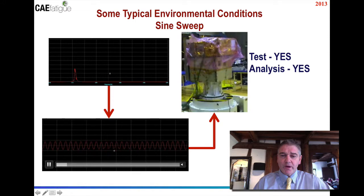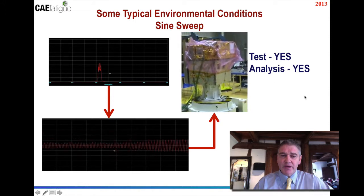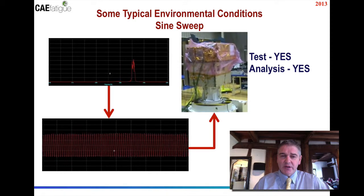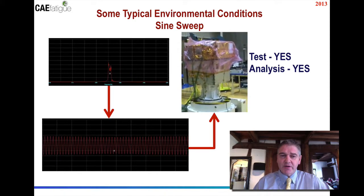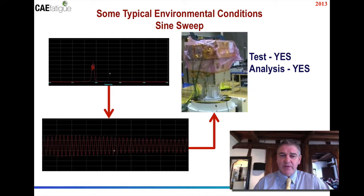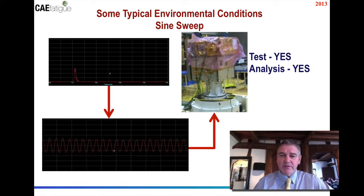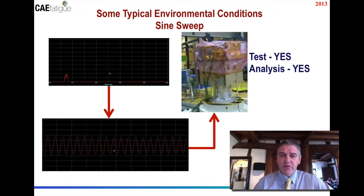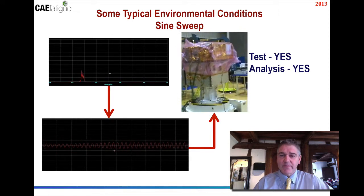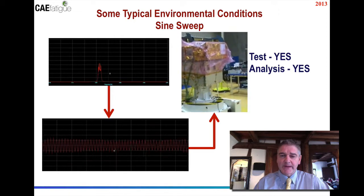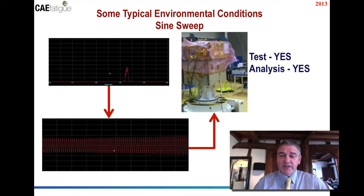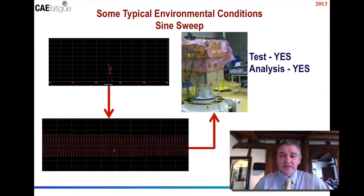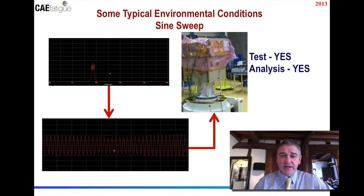Another type of load application is continually varying frequency content — a so-called sine sweep. This is a constant-amplitude sine wave of load applied over a varying frequency range, with the purpose of identifying failure modes at alternating different frequency values. In terms of whether this can be done with test or analysis, the answer is yes to both — it can be done easily in either.